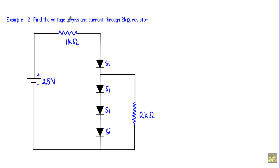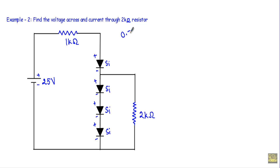This is my second example of a diode series circuit. Four silicon diodes are all connected in series. I have to calculate the voltage drop across and current through a 2kΩ resistor. The positive terminal of the 25V source connects to the P side of all four diodes and the negative terminal to the N side of all four — so all diodes are in forward bias, and I will replace each with a 0.7V source.